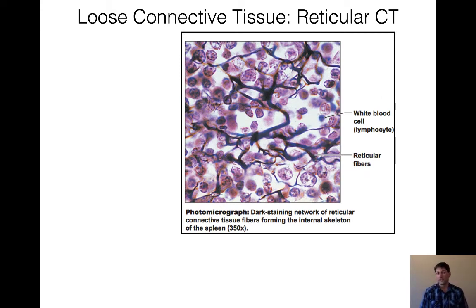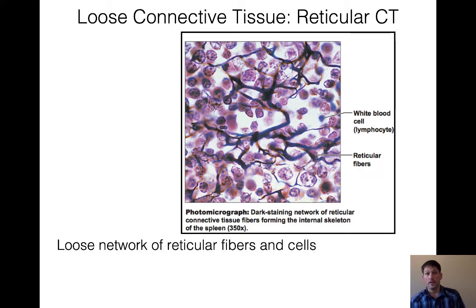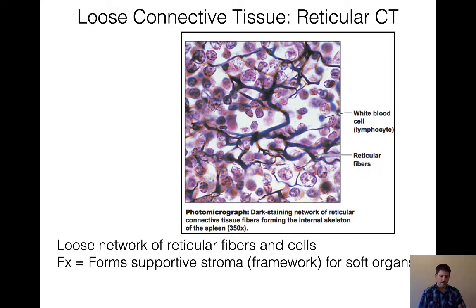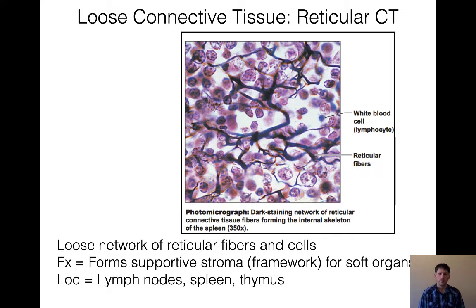Here's that reticular connective tissue image from earlier. It's a loose network of fibers and cells that creates a supportive framework for our organs. Think of those orange mesh bags — it offers a similar kind of support. We find reticular tissue in our lymph nodes, our spleen, and in the thymus.